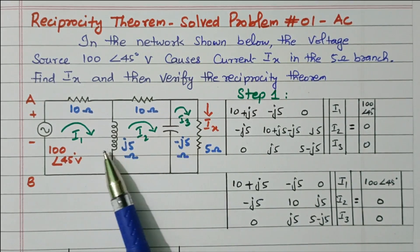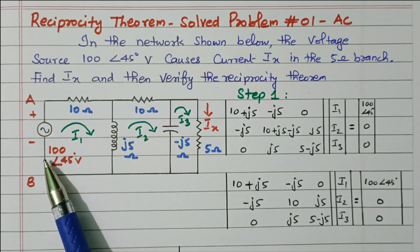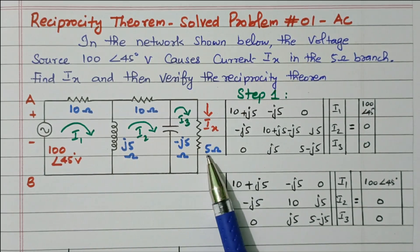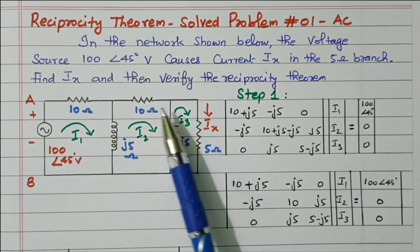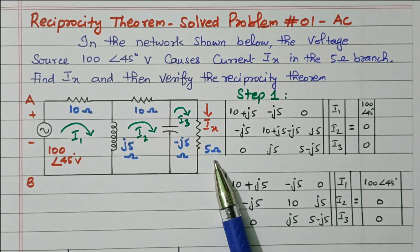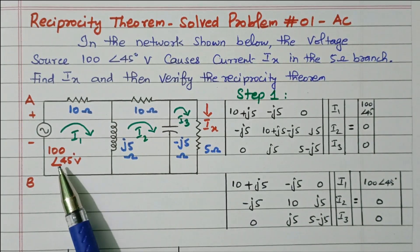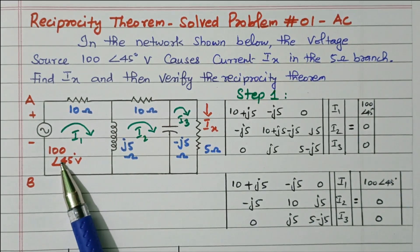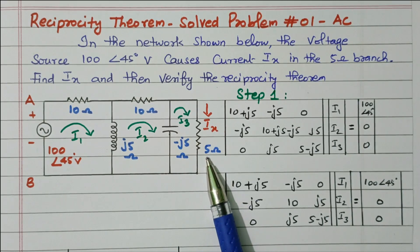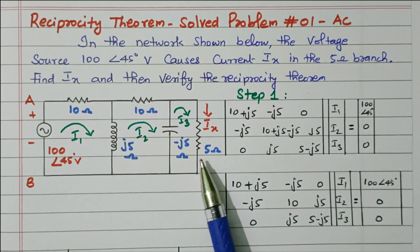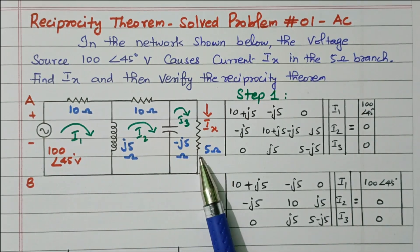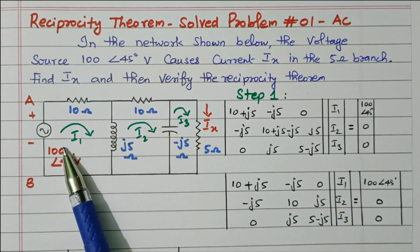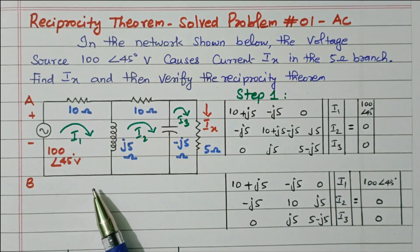I1, I2, I3 are the currents in the three loops. In loop 1 the voltage source is available. In loop 3, the 5 ohm is available; through the 5 ohm the current flowing is IX. The reciprocity theorem means the voltage source available in branch 1 has current calculated in branch 3. Based on reciprocity theorem, the voltage source in branch 1 should be transferred to branch 3, so that current in branch 3 will reflect in branch 1.